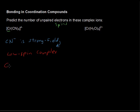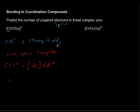We have the Cr2+ ion that combines with cyanide to give this complex ion. The electron configuration is the argon core and then 3d4. So there are four valence electrons in a 3d orbital. This is an orbital diagram, and we've got these squares — this is a typical orbital diagram.